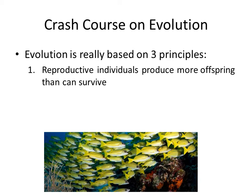Evolution is based on just three principles. The first one is that reproductive individuals produce more offspring than can survive, which is quite obvious when you deal with animals that produce lots of eggs. But even for humans, who produce a relatively large number of offspring over the course of their lifespan, to keep the population stable you need only have two individuals survive that entire time.